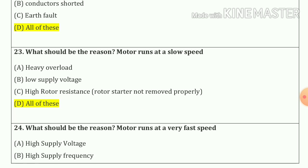Question number twenty-three: What should be the reason the motor runs at slow speed? So our answer is all of these — that means A, B and C also.